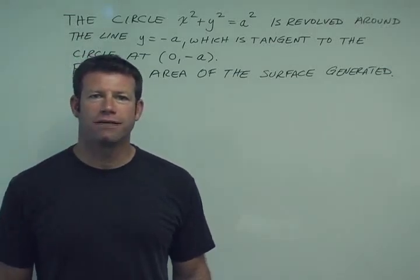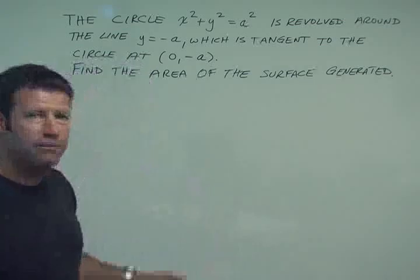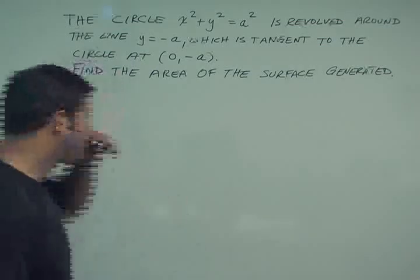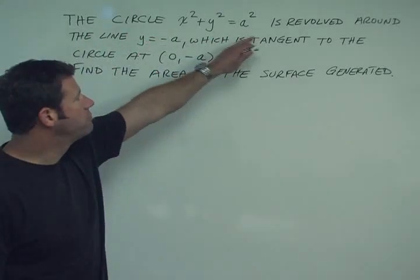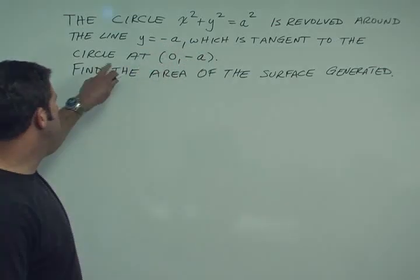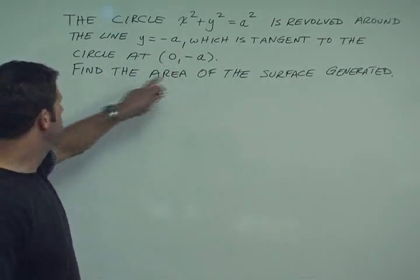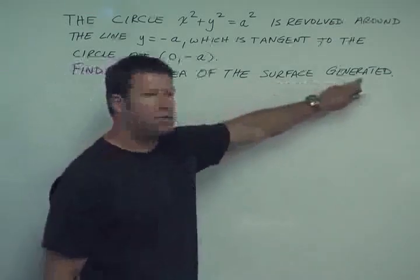Okay, the problem today is kind of a tough one, but not impossible. Let me just read the statement first. The circle x squared plus y squared equals a squared is revolved around the line y equals minus a, which is tangent to the circle at (0, -a). Find the area of the surface generated.